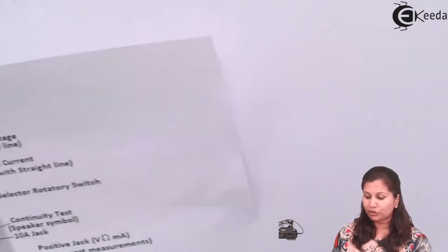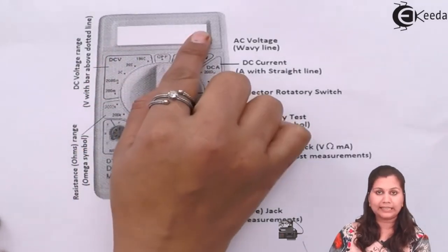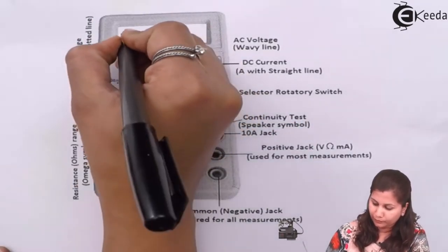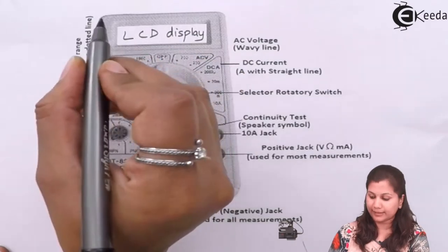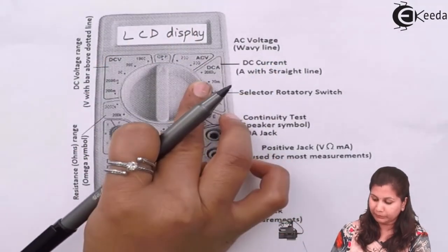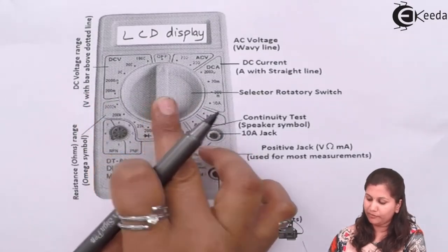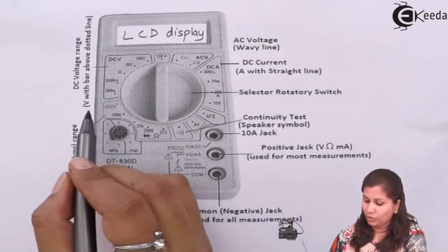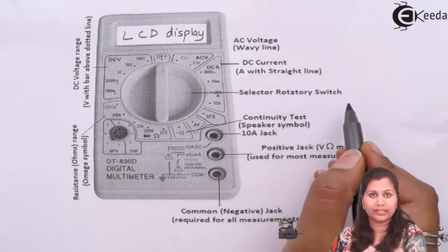Now if we see how a digital multimeter looks, let's see the picture of a digital multimeter. This is a digital multimeter in which we are having an LCD display — that is liquid crystal display — on which we are going to get the digital output. On the front panel, you can see we are having a knob which is the selector rotary switch.